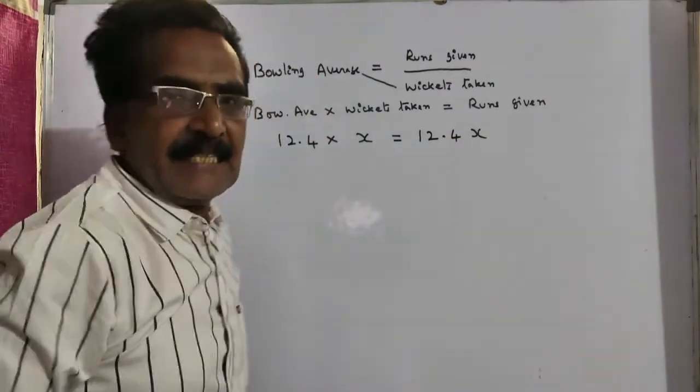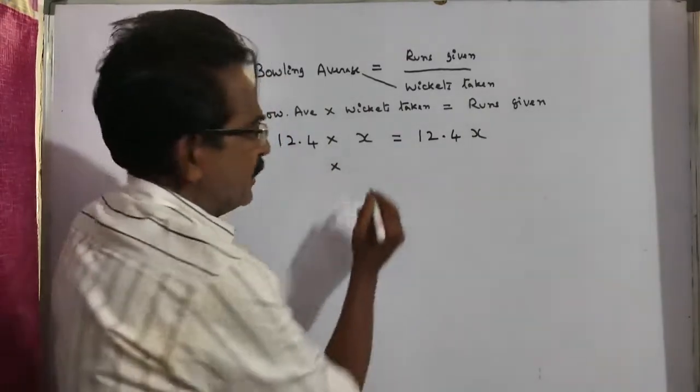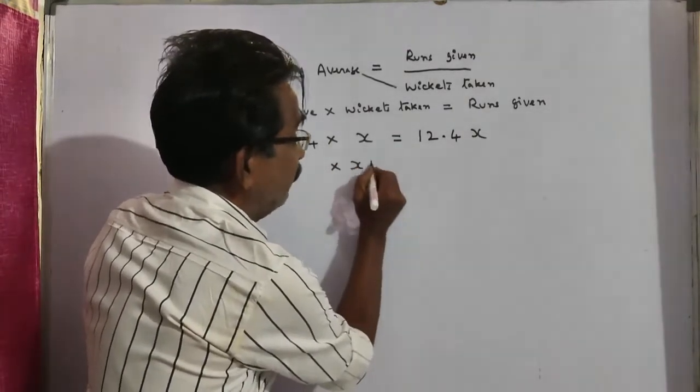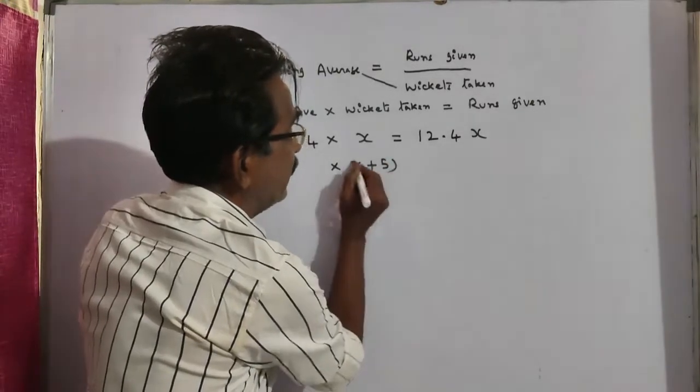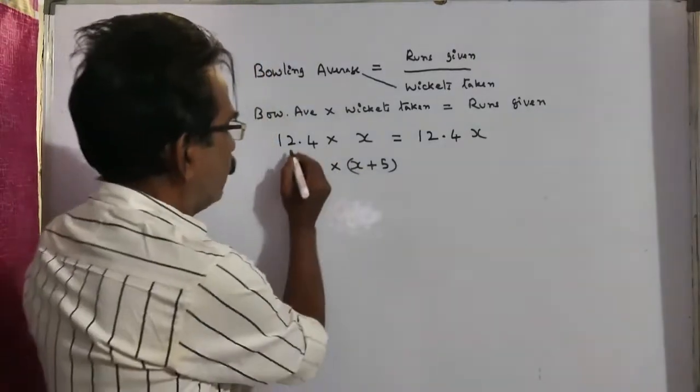And, in the next match, he has taken 5 wickets. So, he has taken 5 wickets. That is, the number of wickets x plus 5.